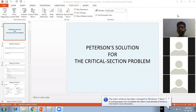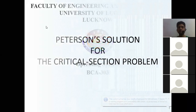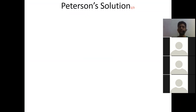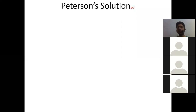Peterson's solution for the critical section problem is restricted to only two processes. While there are typically more than two concurrent processes in a system, understanding Peterson's solution gives a solid foundation for how concurrent processes can be managed. So let's start.